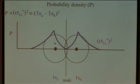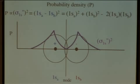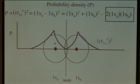If we write out all the terms, we again have 1s(a) squared plus 1s(b) squared, but now we are subtracting the interference term. So subtracting the interference term means we have destructive interference.